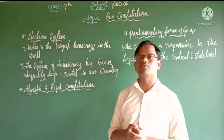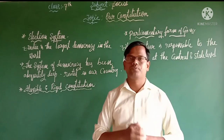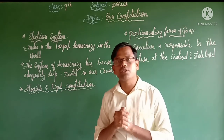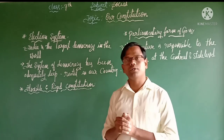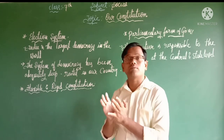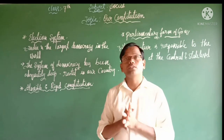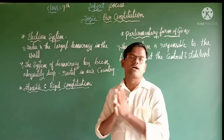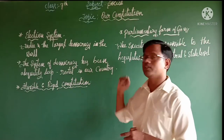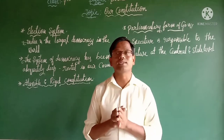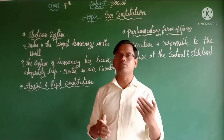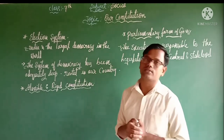The next feature is the election system. India is the largest democracy in the world. Democracy means 'by the people, for the people, and of the people.' There is no king rule; instead, there are elected representatives chosen by the people. In the past six decades, periodic elections have been conducted, and the system of democracy has been adequately deep-rooted in our country. It is still a satisfactory system in spite of certain demerits.